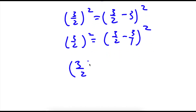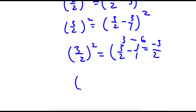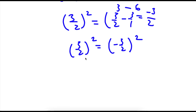Now I have 3 over 2 squared is equal to 3 over 2 minus 3 over 1. The common denominator is 2: 1 times 3 is 3 minus 2 times 3 is 6, so I have 3 minus 6 which is equal to negative 3. So now I have 3 over 2 squared which is equal to negative 3 over 2 squared. And 3 over 2 squared is 3 over 2 times 3 over 2, which is equal to 9 over 4.